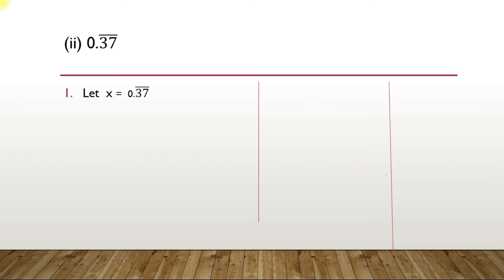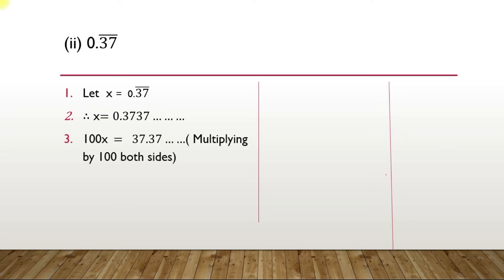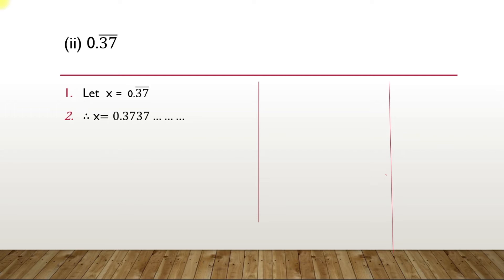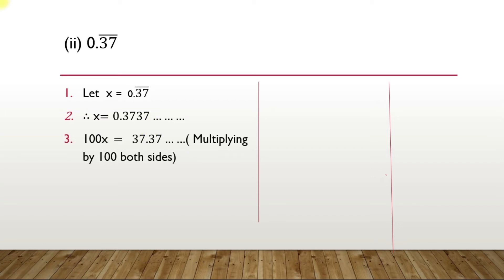The same first step: let x equal to 0.37 recurring. So x equals 0.3737... and it goes on. Now, how many numbers are recurring? 2 numbers. When 2 numbers are recurring you have to multiply by 100, because 100 has got 2 zeros. In the first sum it was 1 number recurring, so you multiplied by 10. Here 2 numbers recurring means multiply by 100.